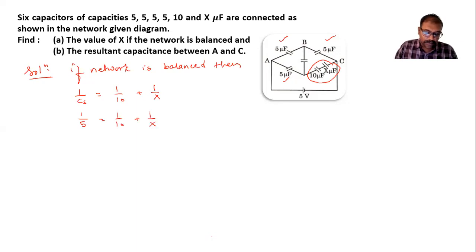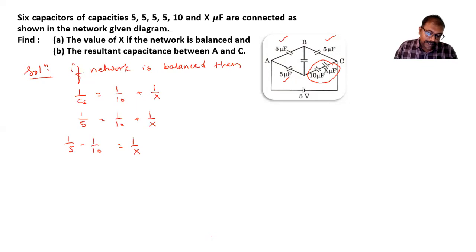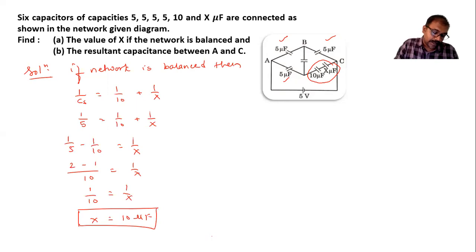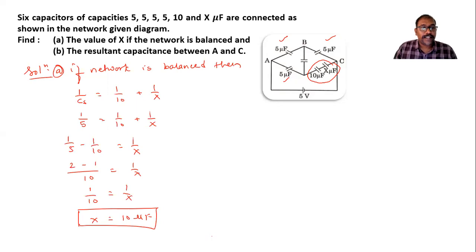So 1/5 minus 1/10 equals 1/x. That gives us (2 minus 1) divided by 10 equals 1/x, so 1/10 equals 1/x. Therefore x is equal to 10 microfarad. The value of x if the network is balanced is 10 microfarad.